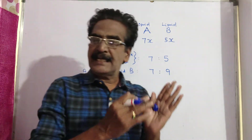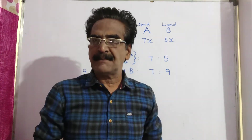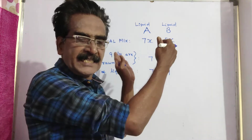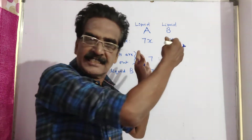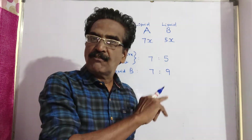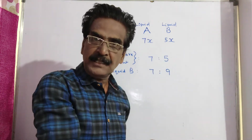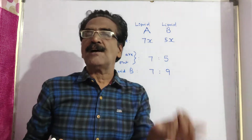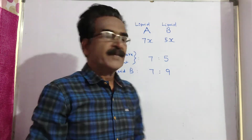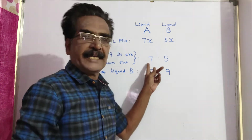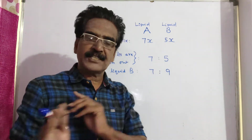Now 9 liters of mixture is drawn out. Please remember one thing: if 9 liters of mixture is drawn out, the quantities of A and B will be reduced, but the ratio of liquids A and B remains the same — that is, the same 7 is to 5 even after drawing out the 9 liters of mixture.